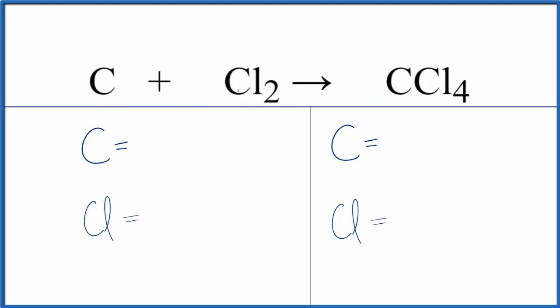Let's balance this equation. If you're given this, this is how you would balance it. Reactant side: one carbon, two chlorine atoms. Product side: one carbon and four chlorine atoms.